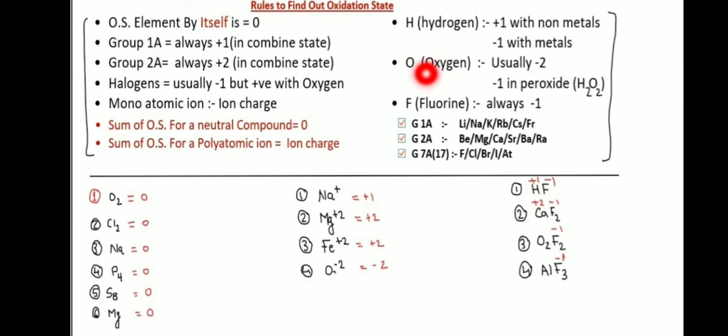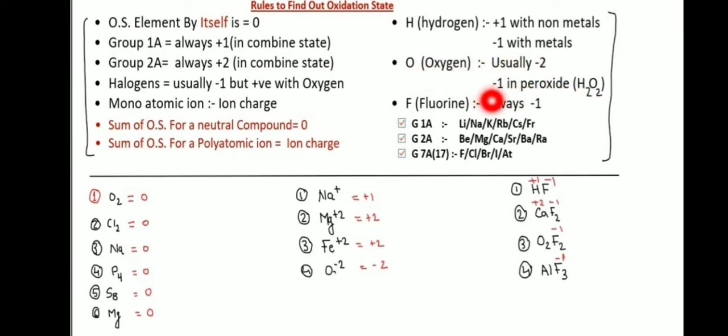Oxygen oxidation state is usually minus two. But in hydrogen peroxide, oxygen oxidation state is minus one.